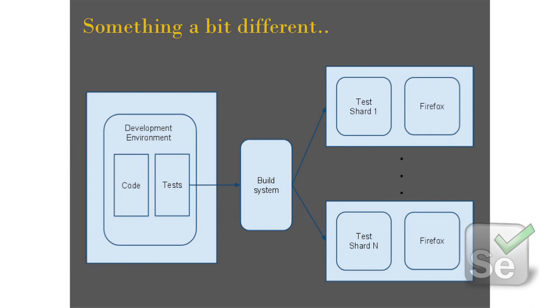There was something a bit different we also tried: take the tests, pack them together with Selenium and the browser, ship them to a build machine on the farm of machines doing all the building and testing, and let it run there. It's possible to do with Firefox on Linux because you can pack it relatively easily and ship it. What you also do here is shard the tests — split them so you can run different tests from one test suite in parallel and get results fast. This is very good when you have a lot of Linux machines available.